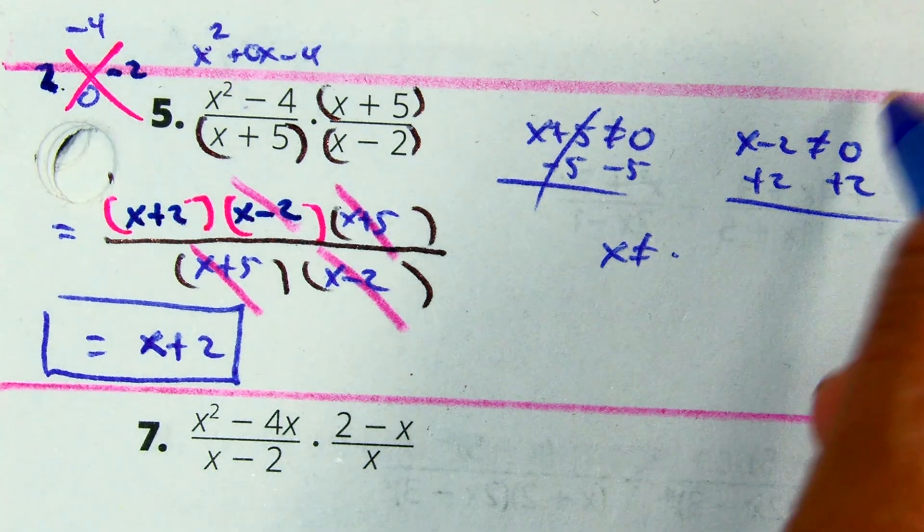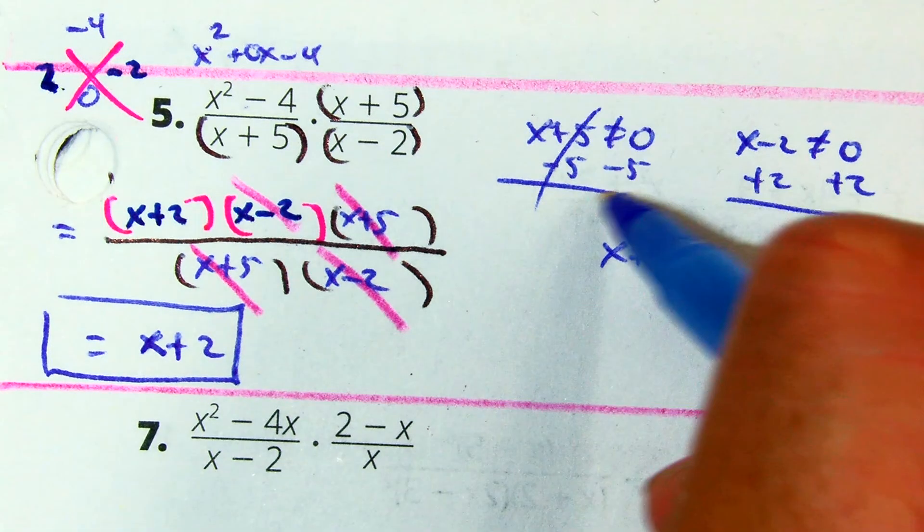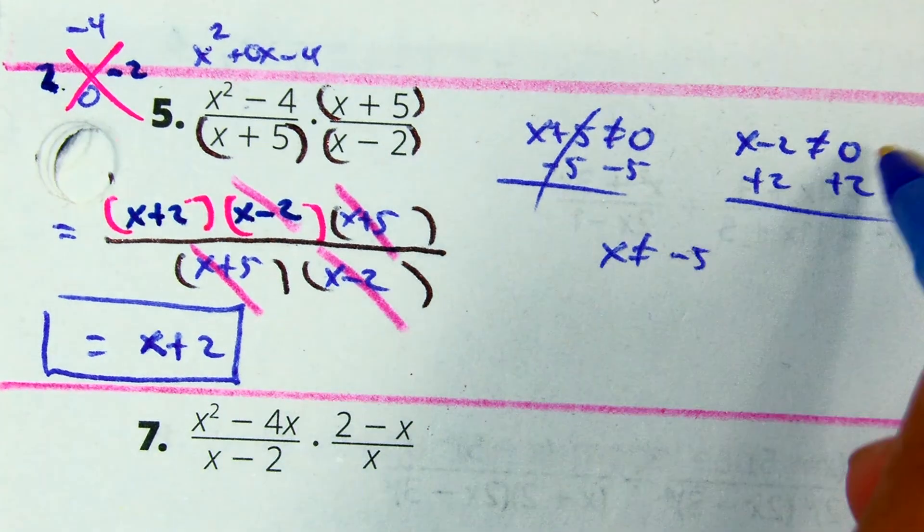So, this one becomes what? Negative 5. Thank you. And this one? Positive 2. There you go.